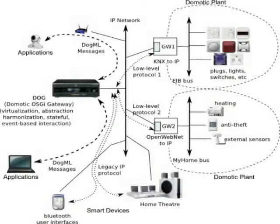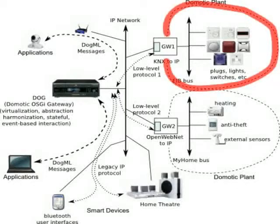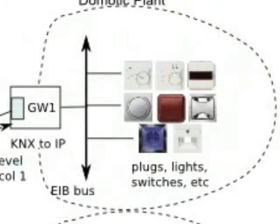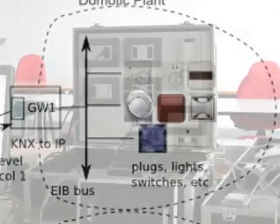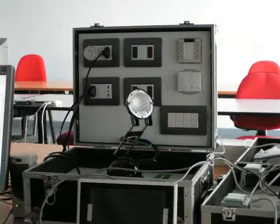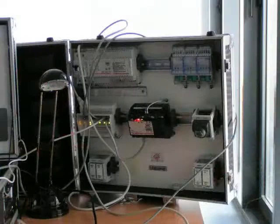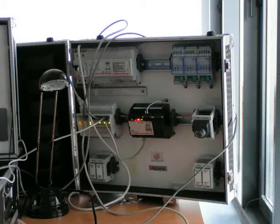DOG controls the devices connected to domotics plants. For each device, DOG knows its current status and may issue commands. The laboratory setup in which DOG runs includes two demo boxes, based on the Vitticino MyHome and on the KNX standards, respectively.